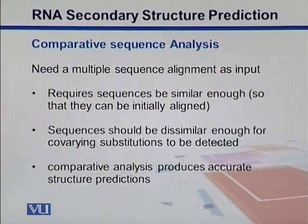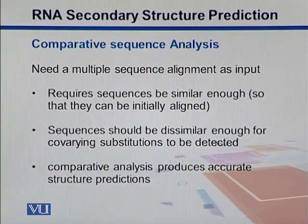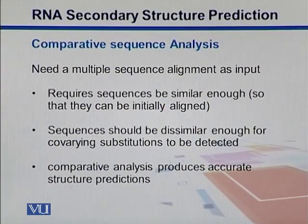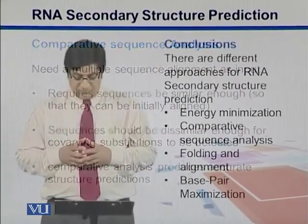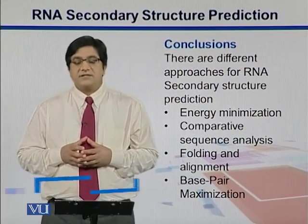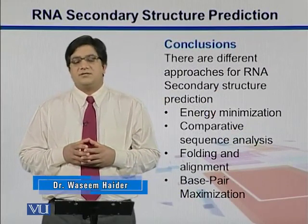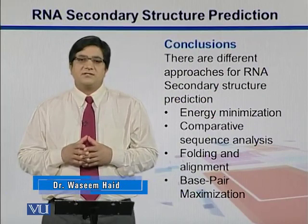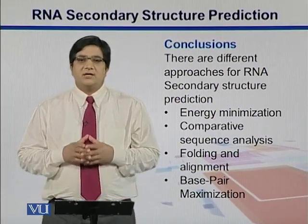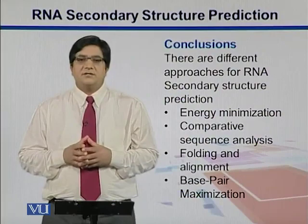In comparative sequence analysis, we do a multiple sequence alignment as input, and it requires sequences to be similar enough so that they can be aligned with one another. The sequences should also be dissimilar enough for co-varying substitutions to be detected. If we have dissimilarities, we can look into where we can have those co-variations, and it produces structure predictions. So energy minimization looks for the lowest energy structure, which is the most stable structure.